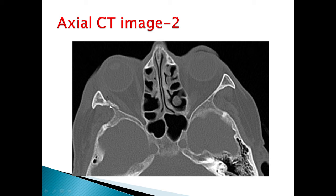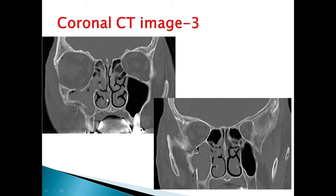The second axial image shows a minimally displaced fracture of the right lateral orbital wall with minimal air loculi in the right extraconal space. This is the lateral rectus muscle, and this is the extraconal space with some air loculi.